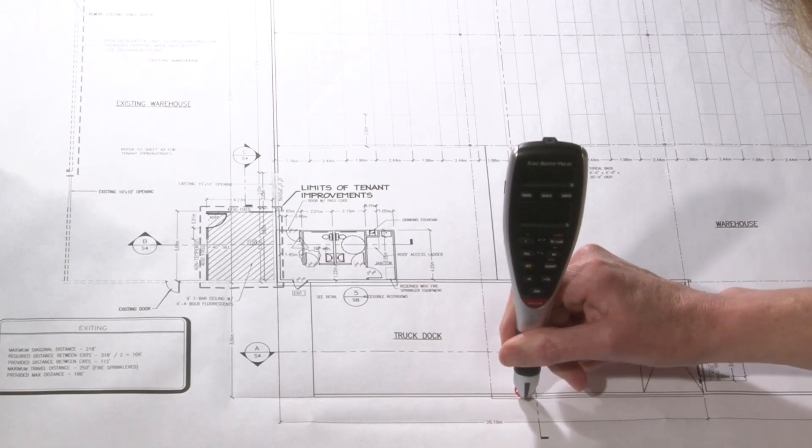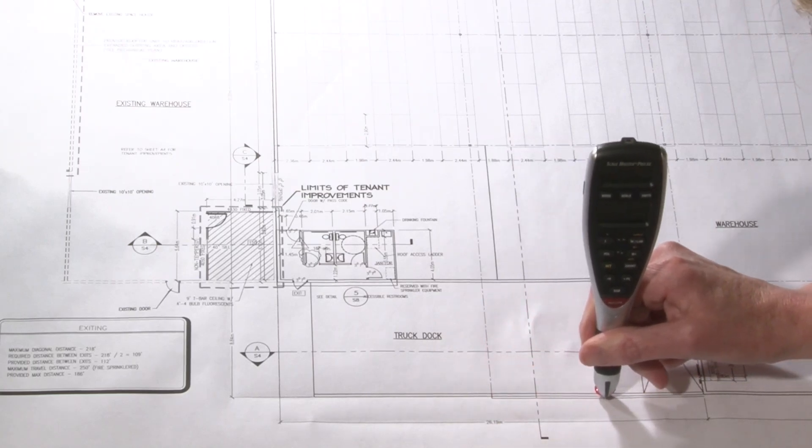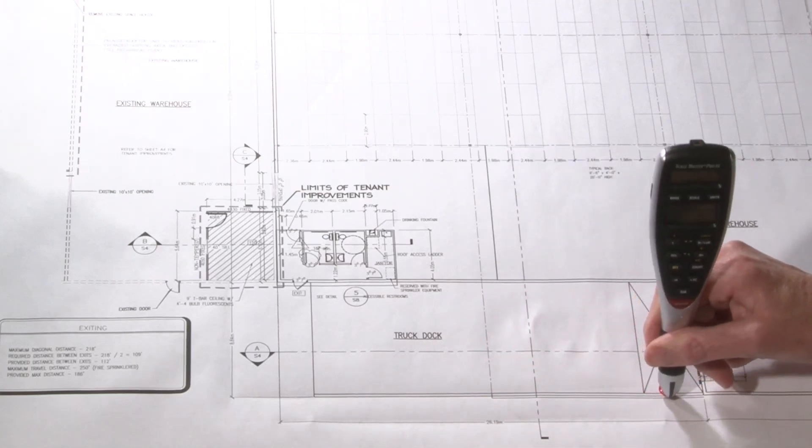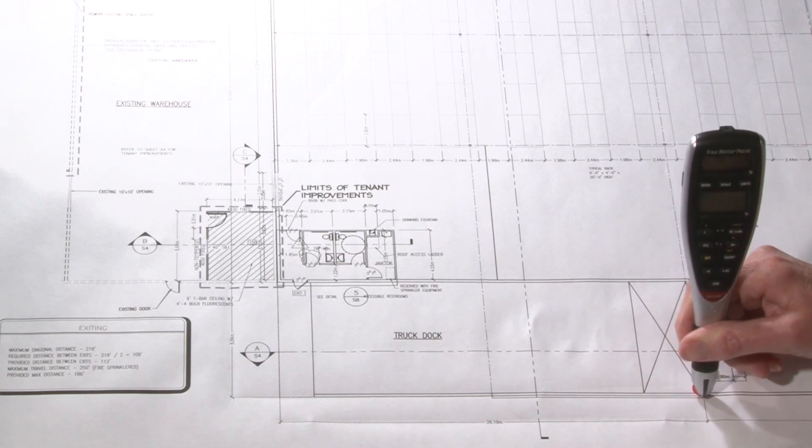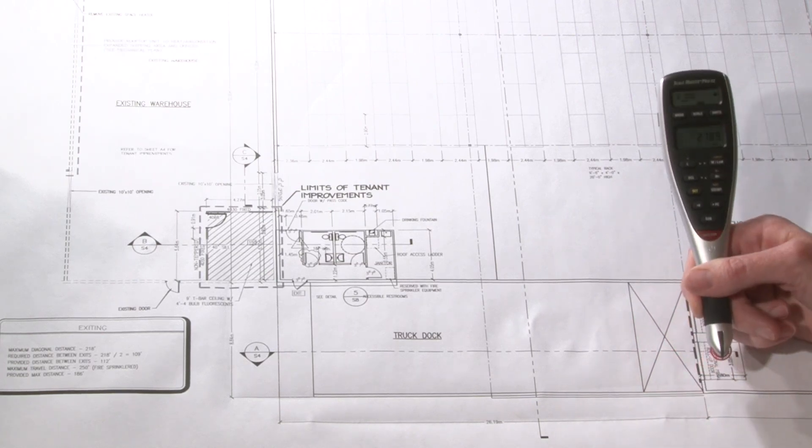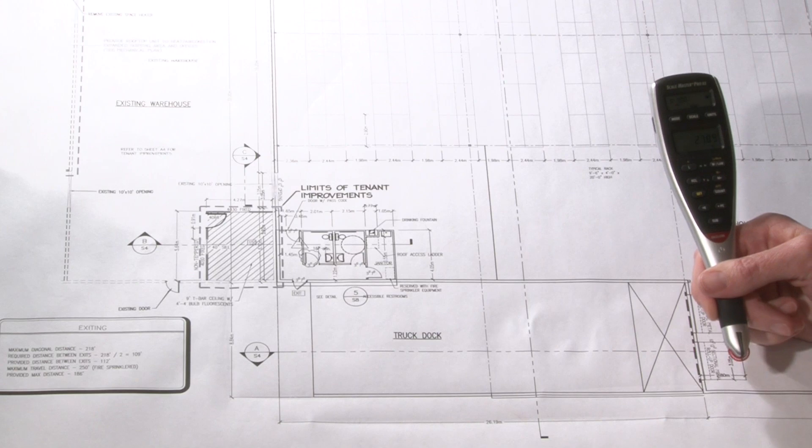You can do straight takeoffs or curves. It's good for taking wire takeoffs or perimeters. That's 27.89 meters.